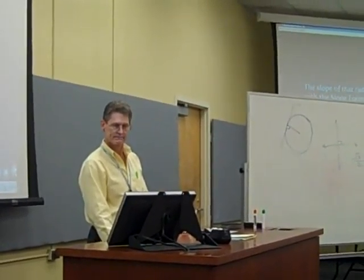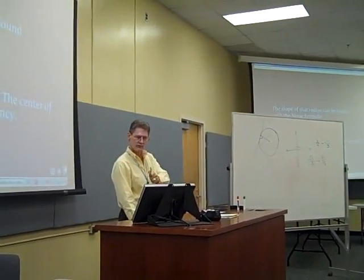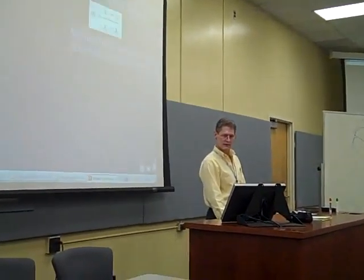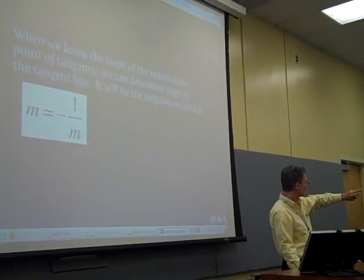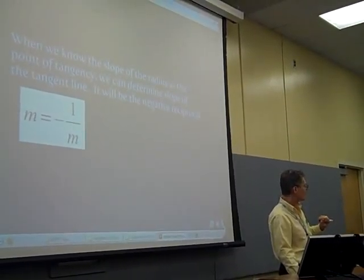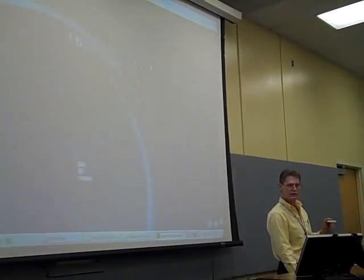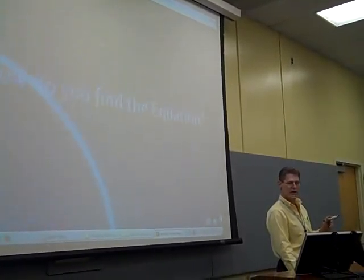All right, so we already covered that. And then we know the slope of the radius is always going to be the negative reciprocal of the tangent line. So how do we find the equation? So here's how we do it. We're going to work a couple of examples today.